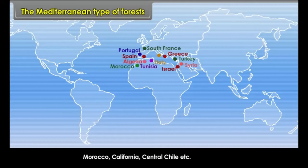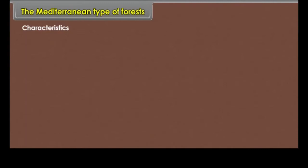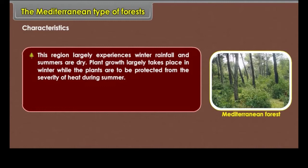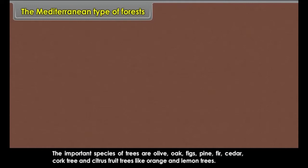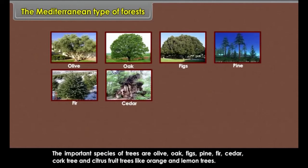Characteristics: This region largely experiences winter rainfall while summers are dry. Plant growth largely takes place in winter, while plants must be protected from the severity of heat during summer. The trees have broad leaves and are widely spaced — not thick, luxuriant or very tall. Important species of trees are olive, oak, figs, pine, fir, cedar, cork tree and citrus fruit trees like orange and lemon.